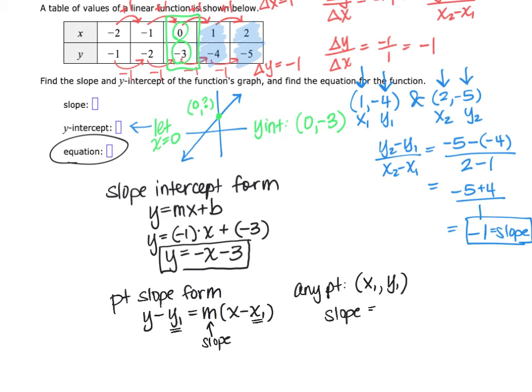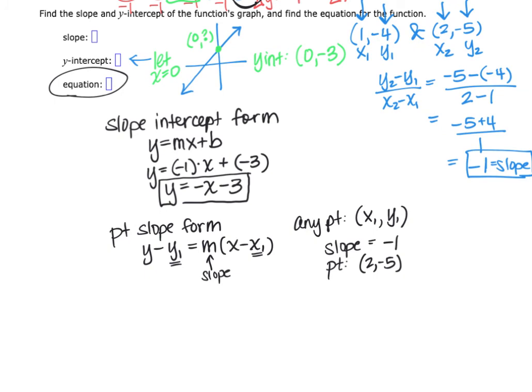So in our case, we know that our slope was negative 1. And then you could pick any coordinate. I'm going to go up to my table and just pick a random coordinate. I'm going to pick this last one here. This point was positive 2, negative 5. And I just want to show you how I could write the equation for this line using point-slope form. So that would be y minus the y-coordinate of my point, y minus negative 5, equals my slope, which is negative 1, times x minus the x-coordinate of my point, which is 2.